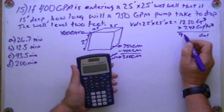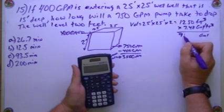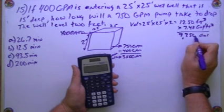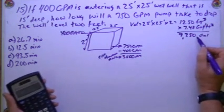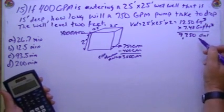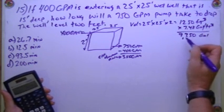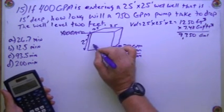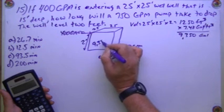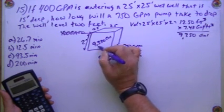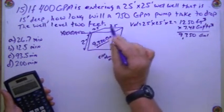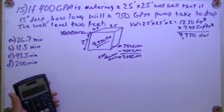9350. 9,350 even gallons. So if I have 9350 gallons right here. 9,350 gallons. That's what this 25 by 25 by 2 foot deep well is.